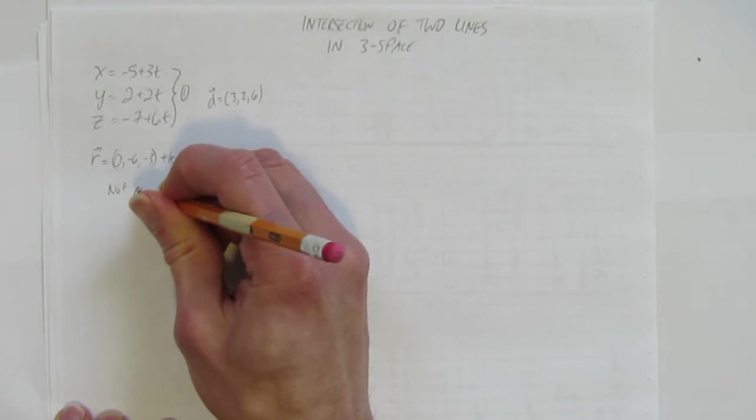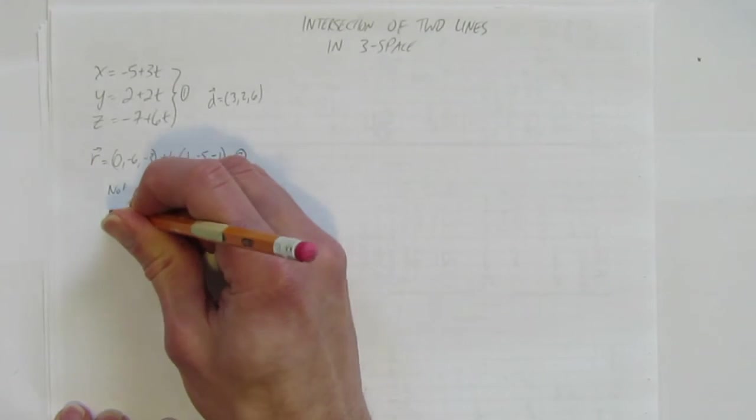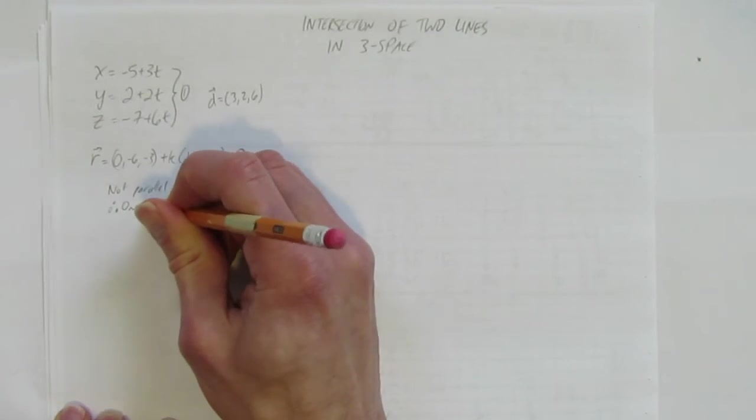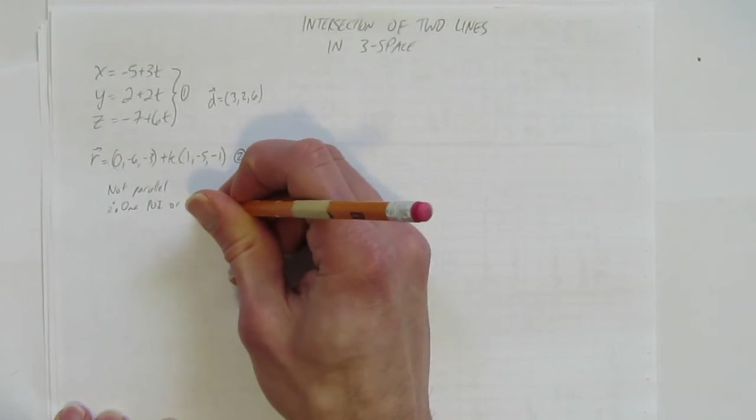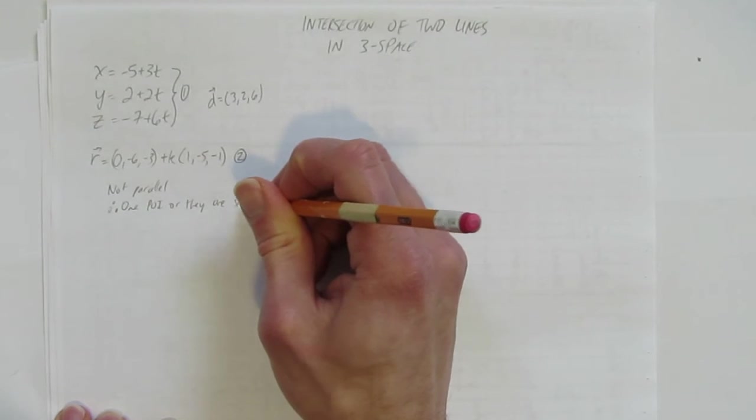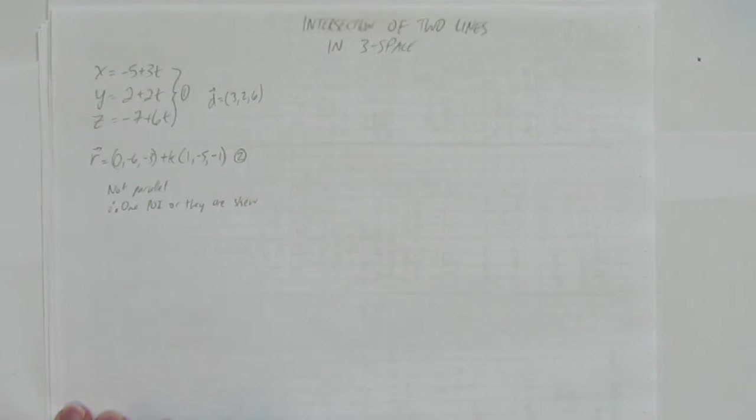So, not parallel. Therefore, they either have one point of intersection or they are skew. That is, they are just two lines. If you think about it, imagine two lines in space. They either just pass each other in space without ever touching, or they touch in one spot. Let's see what the case is here.